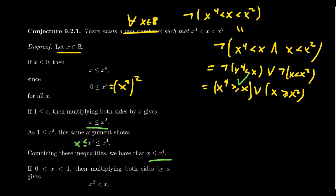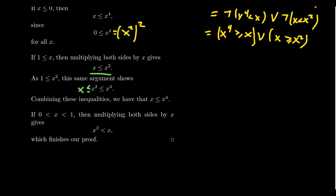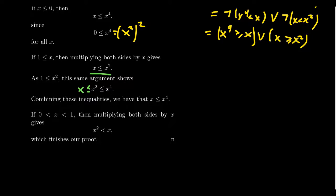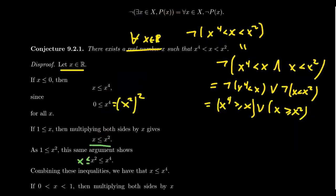So if x is negative or equal to zero, it'll be less than or equal to its fourth power. If x is greater than or equal to one, it'll be less than or equal to its fourth power. The last possibility is what happens if x sits strictly between zero and one. Since x is greater than zero, it's positive, so multiplying both sides by x gives x squared is less than x. That means x is greater than or equal to x squared — which is what we wanted to show. So we've now disproven the conjecture, because by cases we always landed in one of these two camps, and that then disproved the conjecture.